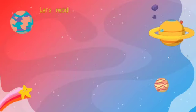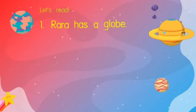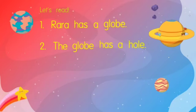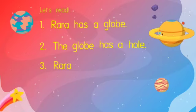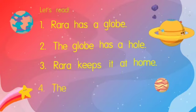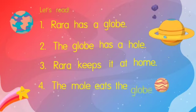Please open on page 13. We will read lots of sentences today. Use your pointer to point the sentences. The first one: Rara has a globe. The second one: the globe has a hole. The third one: Rara keeps it at home. Number four: the mole eats the globe.